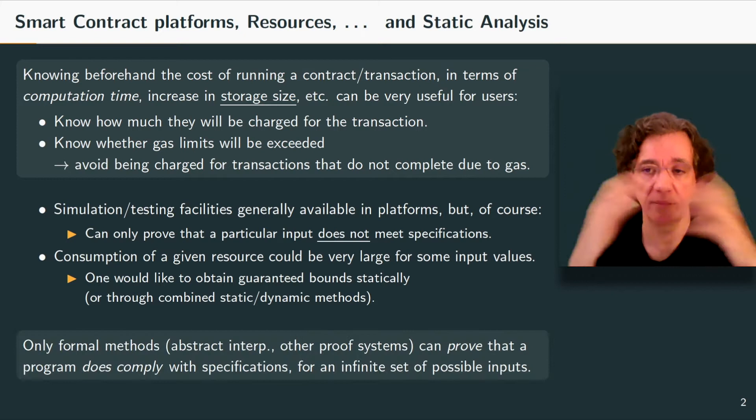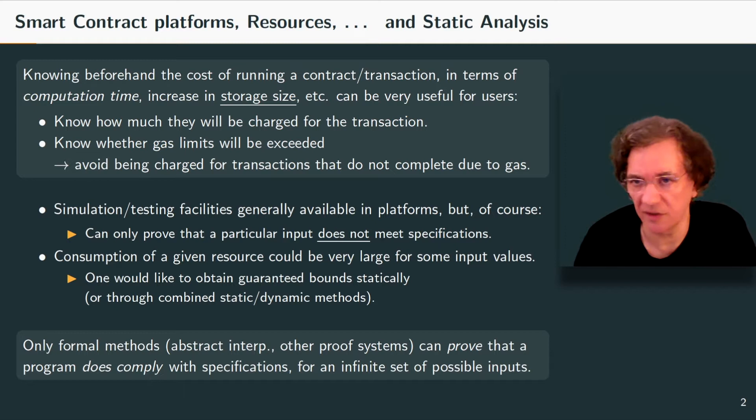We would like to obtain guaranteed bounds statically through some combination of static and possibly dynamic, hopefully static, methods. Only formal methods give us an answer for this. Abstract interpretation or proof systems can prove that a program complies with specifications for an infinite set of possible inputs. So we will try, in particular, abstract interpretation.